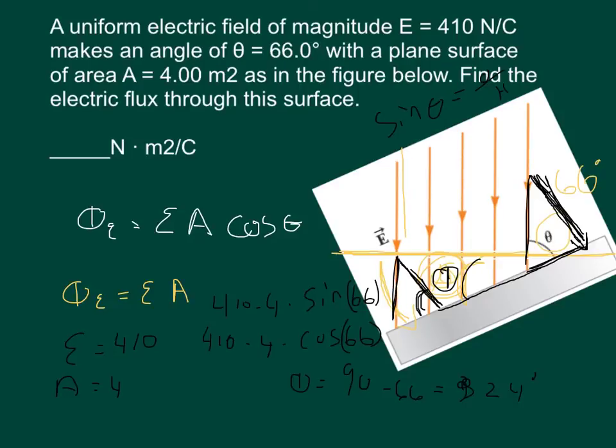So the cosine, so E times A times cosine of 24 is going to equal E times A times sine of 66. So a simple answer, the answer is 1,498 newtons times meters squared per coulomb.